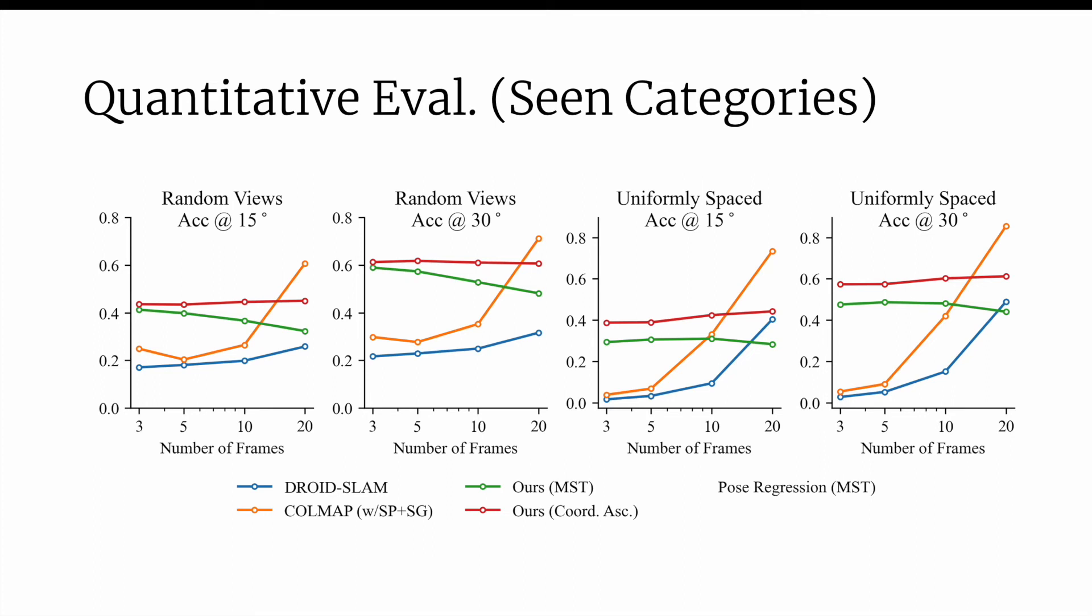Finally, to evaluate the importance of probabilistic prediction, we evaluate a baseline that directly predicts relative pose. And we find that it struggles, suggesting that probabilistic prediction is important for handling ambiguities in the poses.